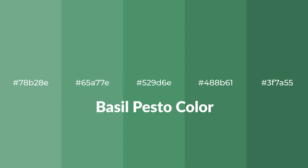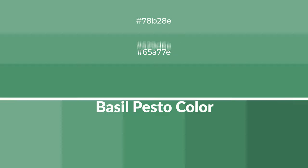Cool shades of basil pesto color with a green hue for your next project. To generate tints of a color, we add white to the color. Tints create light and exquisite emotions. To generate shades of a color, we add black to the color.